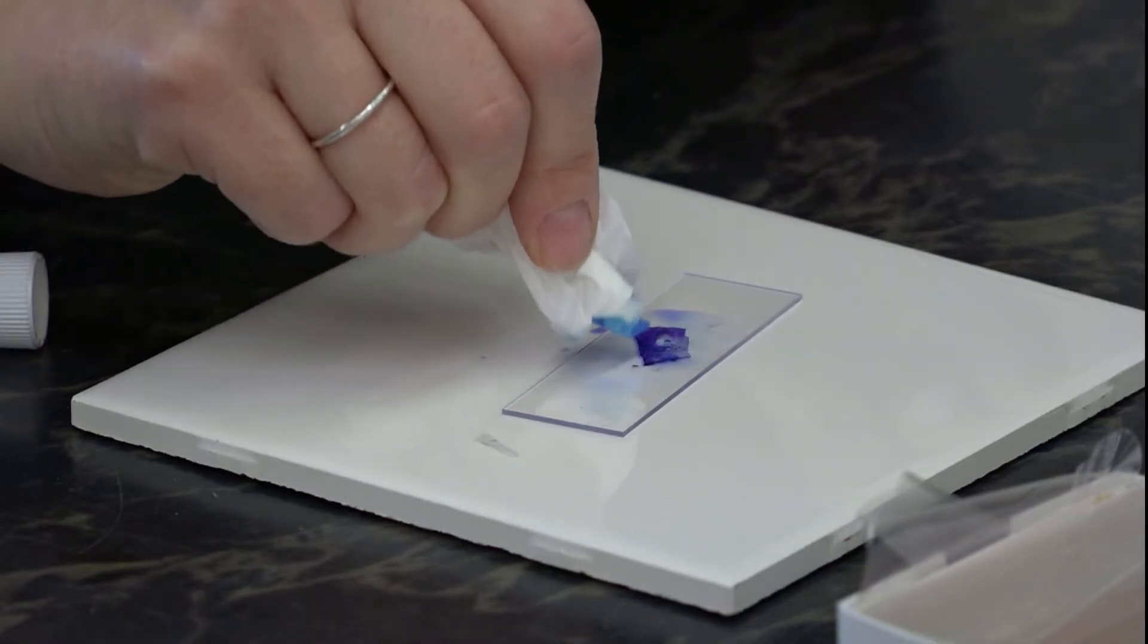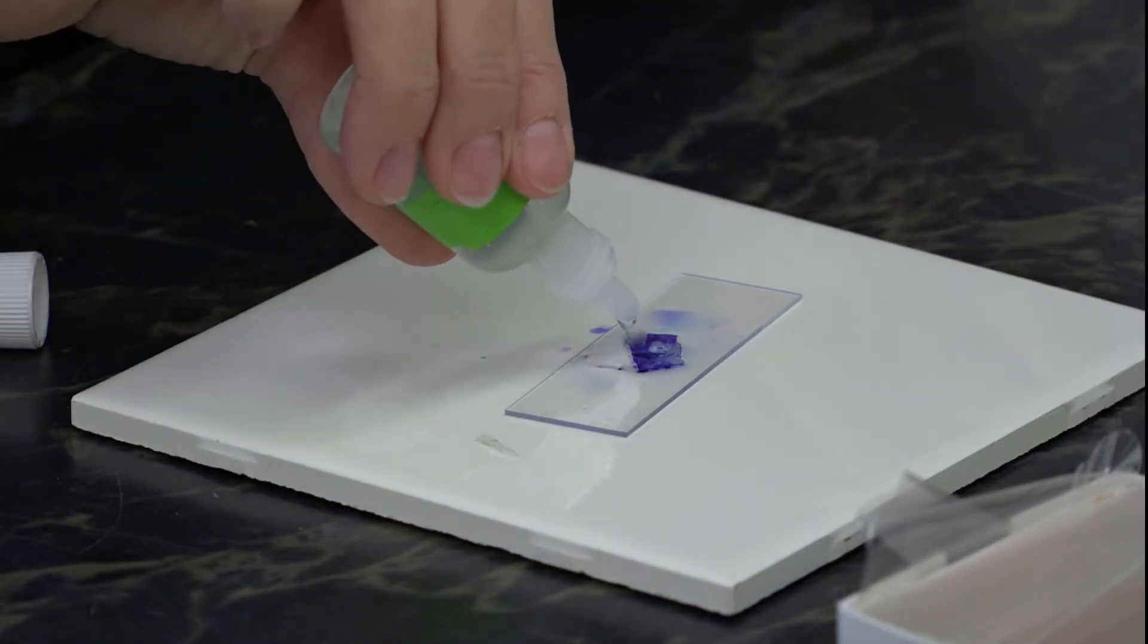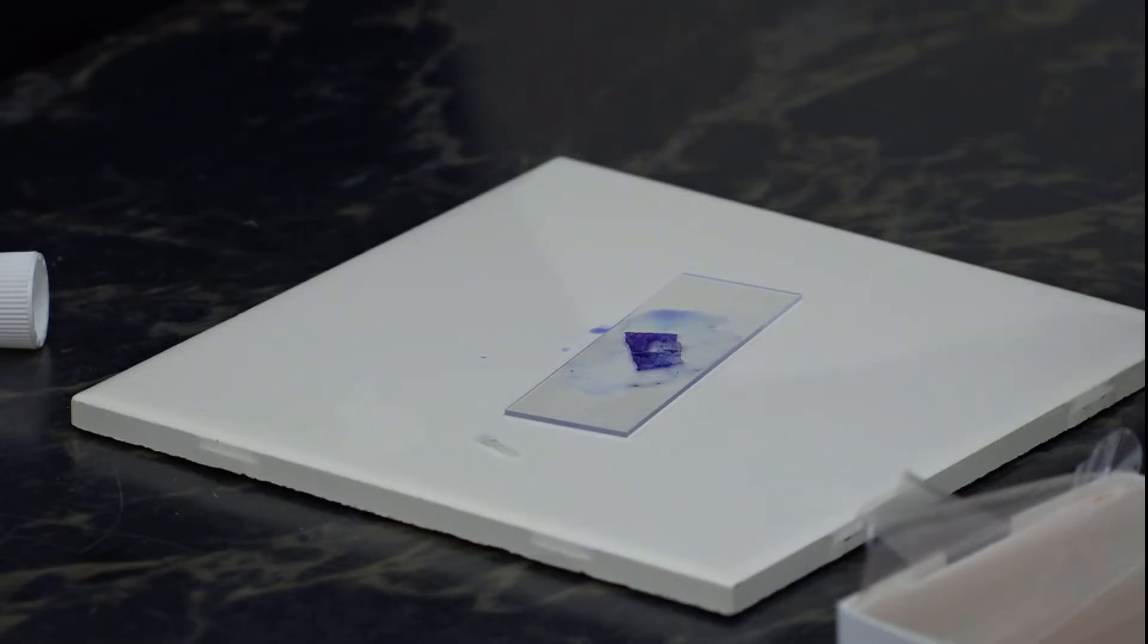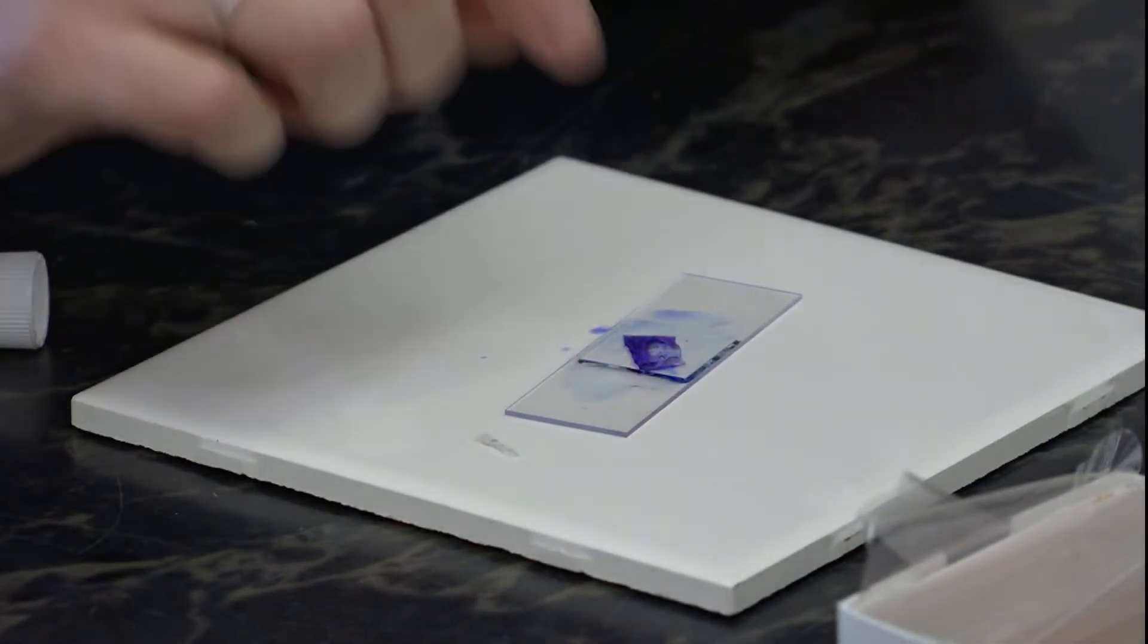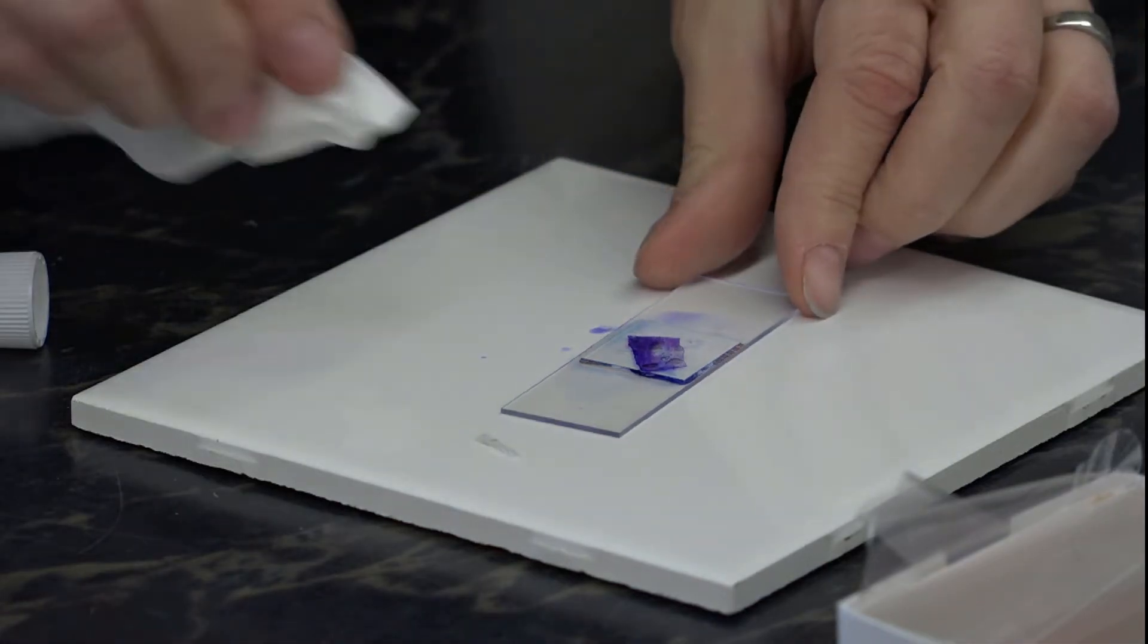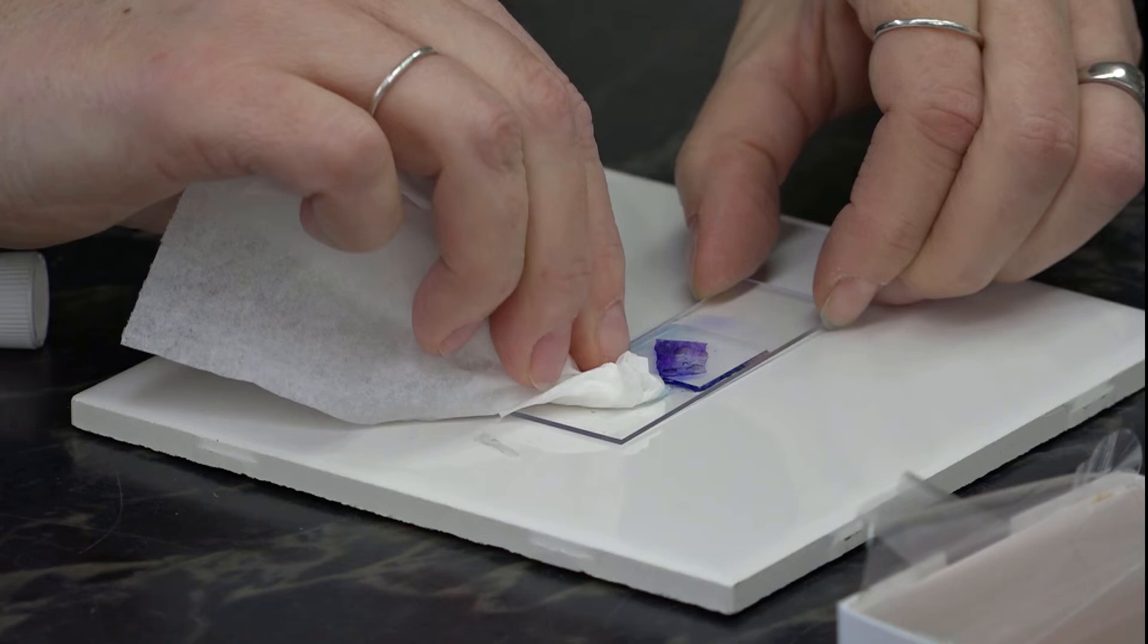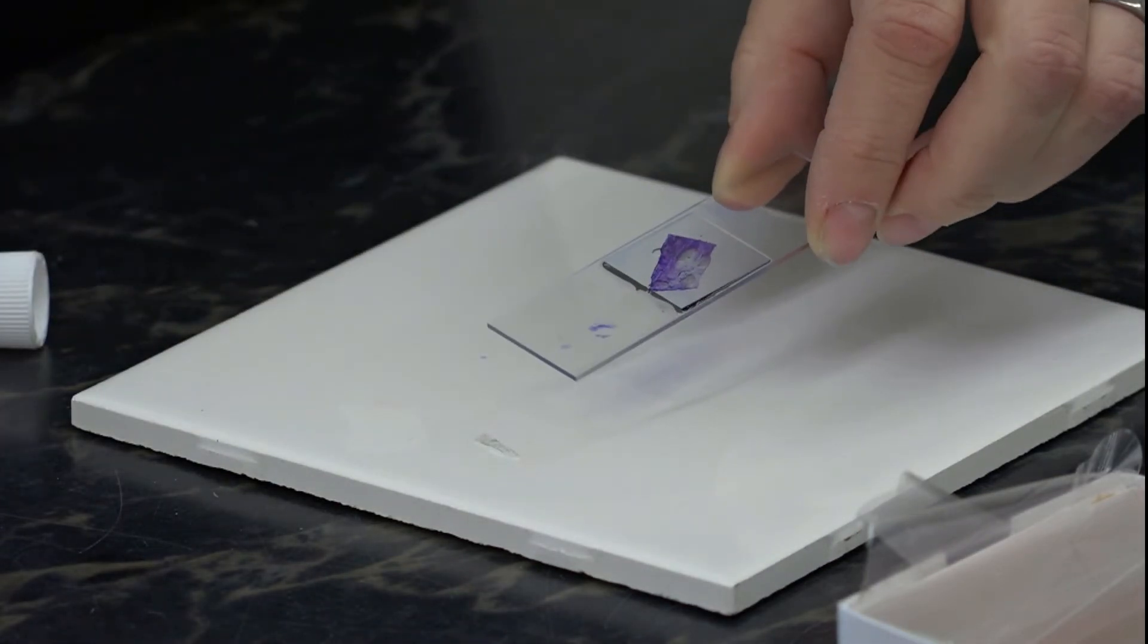If there's a lot of stain on there, you're not going to see as much differentiation. One final drop of water. Cover with a cover slip. Clean up your slide a little. Wipe it underneath and you're ready to go.